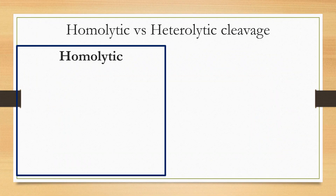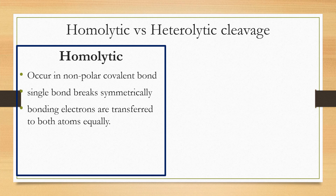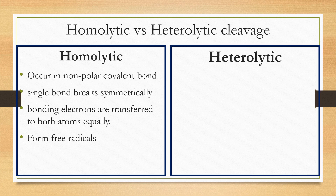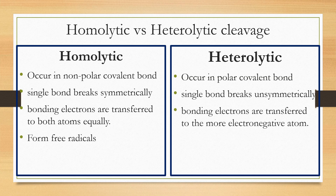Here are the differences between homolytic and heterolytic cleavage. For homolytic cleavage, it occurs in a non-polar covalent bond; the single bond breaks symmetrically, and bonding electrons are transferred to both atoms equally, forming free radicals. For heterolytic cleavage, it occurs in a polar covalent bond; the single bond breaks unsymmetrically, and bonding electrons are transferred to the more electronegative atom, resulting in the formation of a cation and anion.